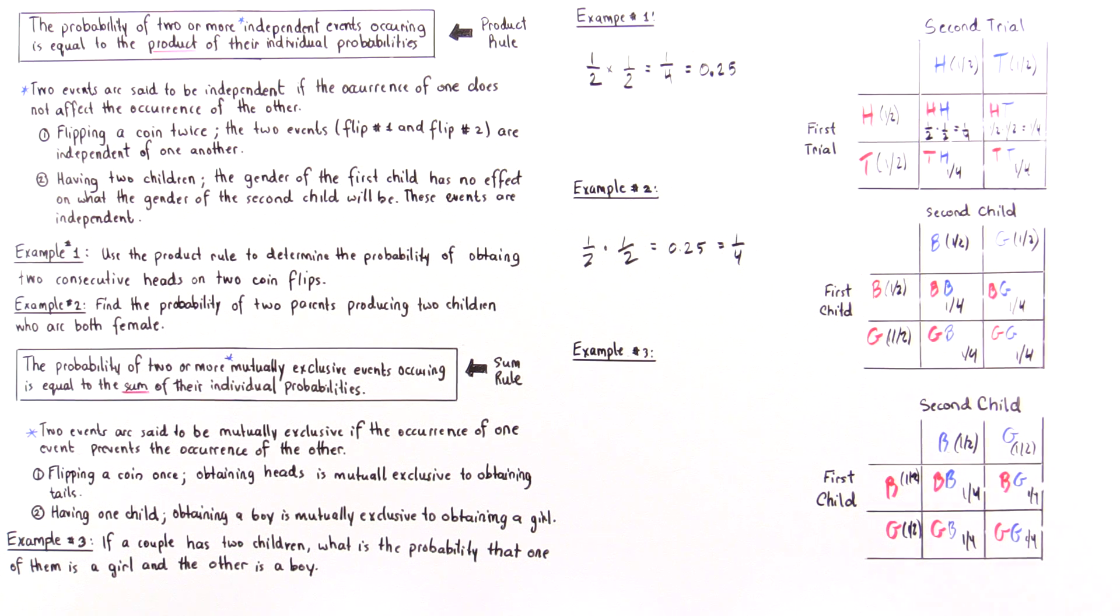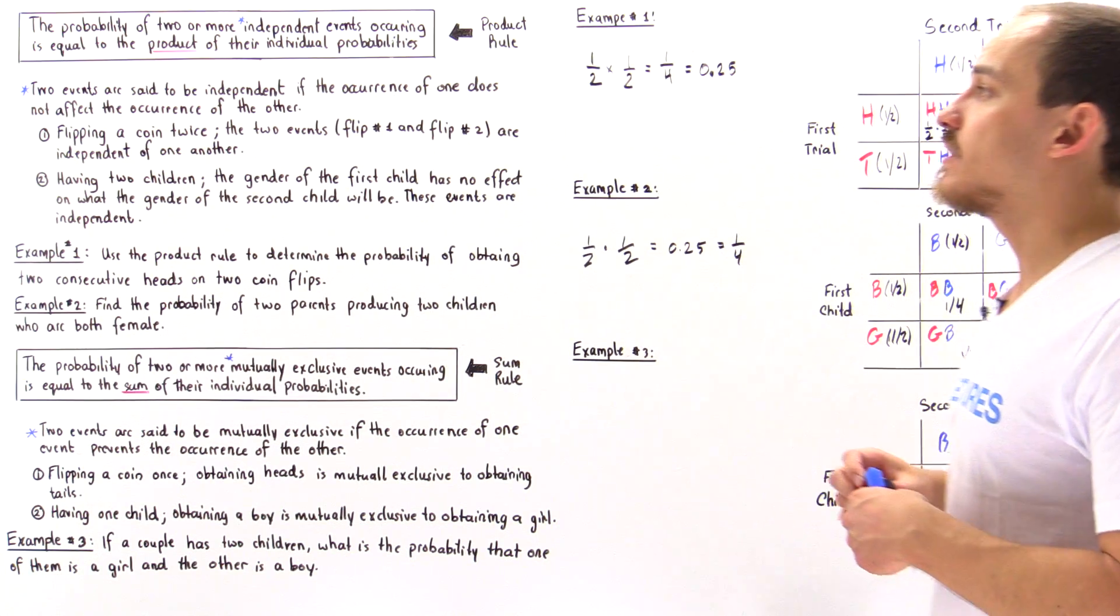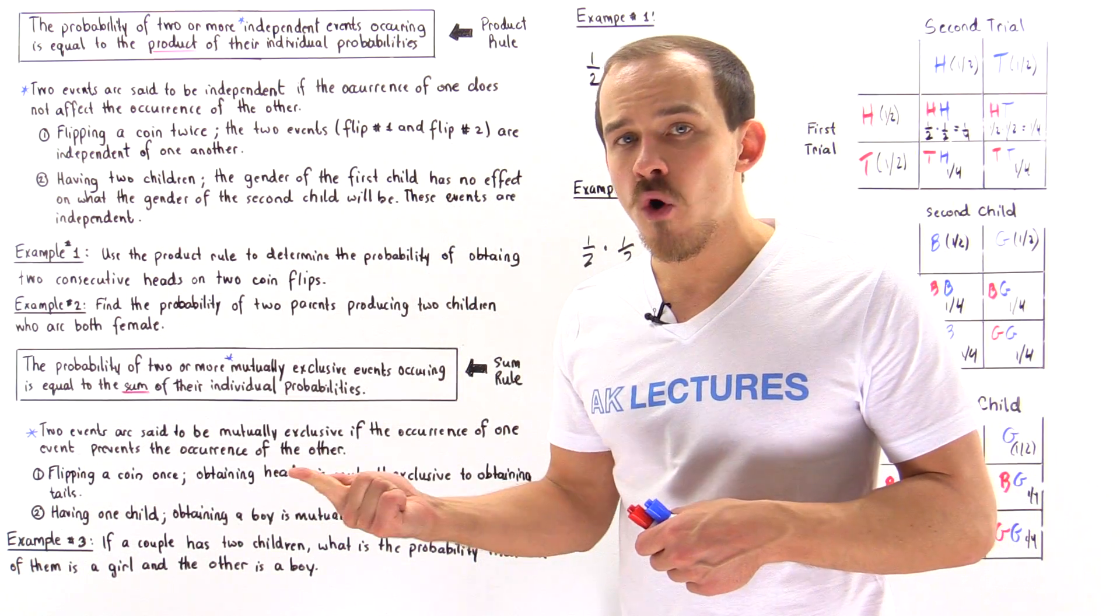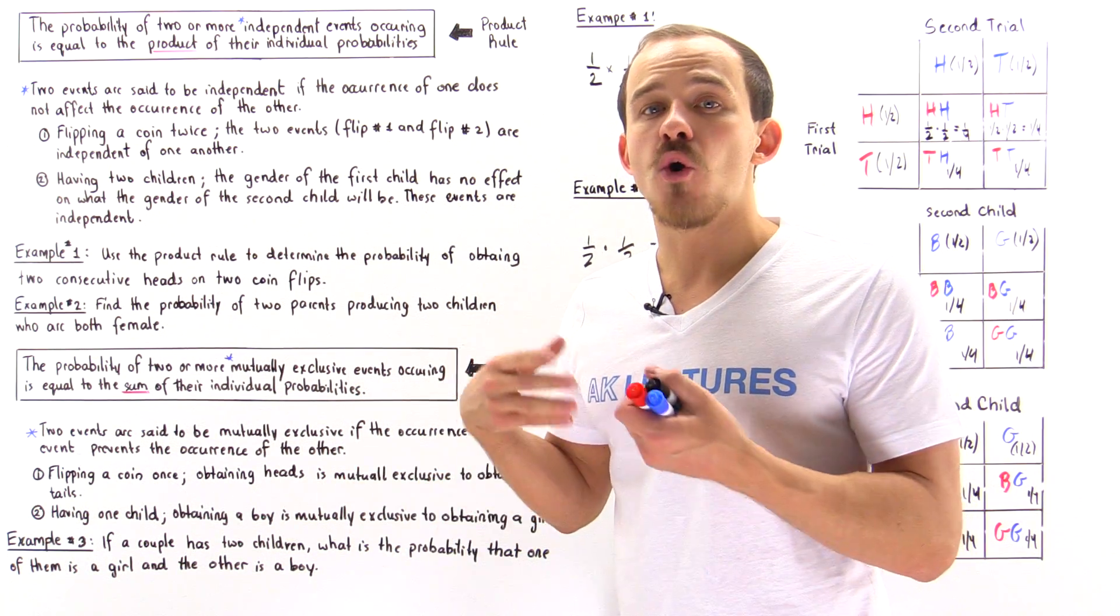This is exactly the same as in this case. So first we apply the product rule and now we have to apply the sum rule. So what we want is one girl and one boy and we don't care about the order.